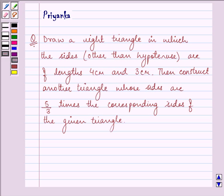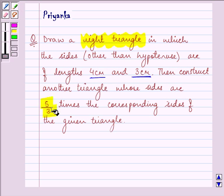Hello friends, how are you all doing today? My name is Priyanka and the question says draw a right triangle in which the sides other than hypotenuse are of length 4 cm and 3 cm. Then construct another triangle whose sides are 5 by 3 times the corresponding sides of the given triangle.